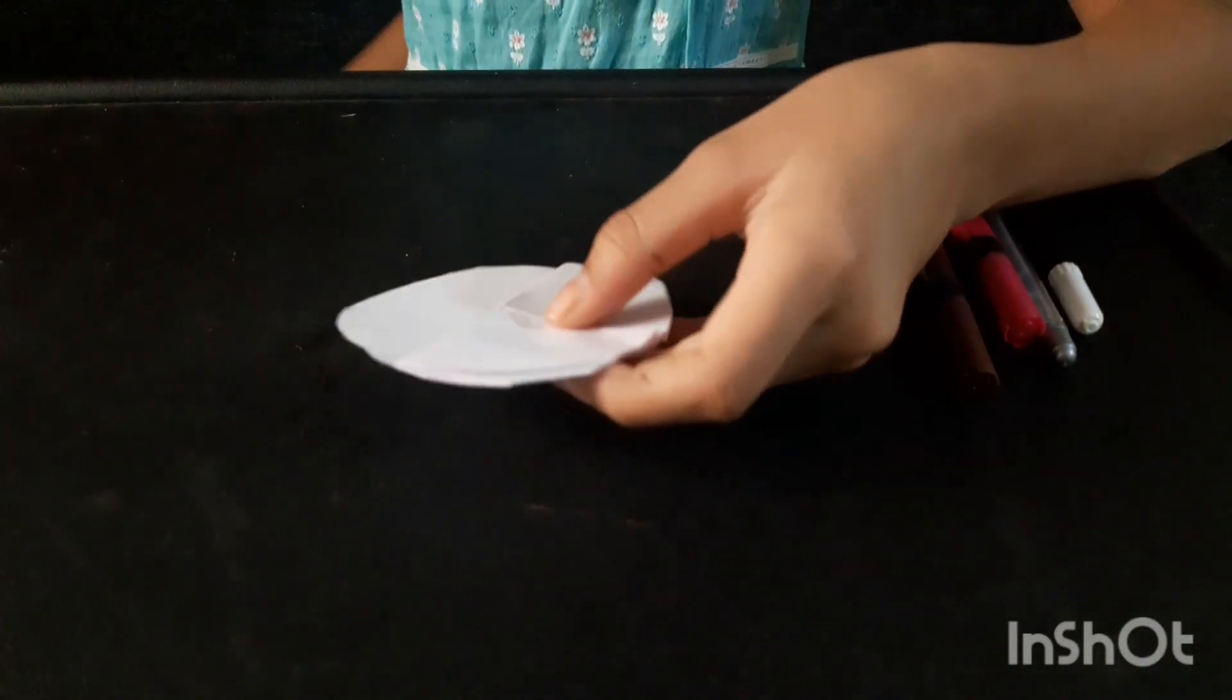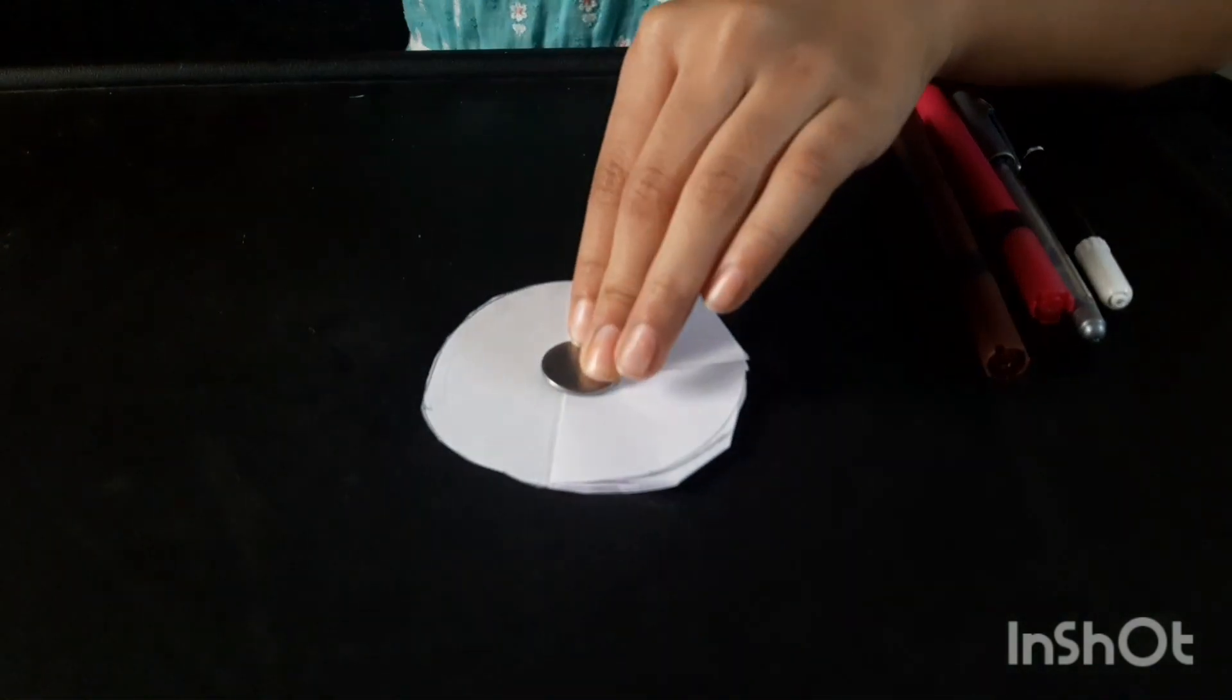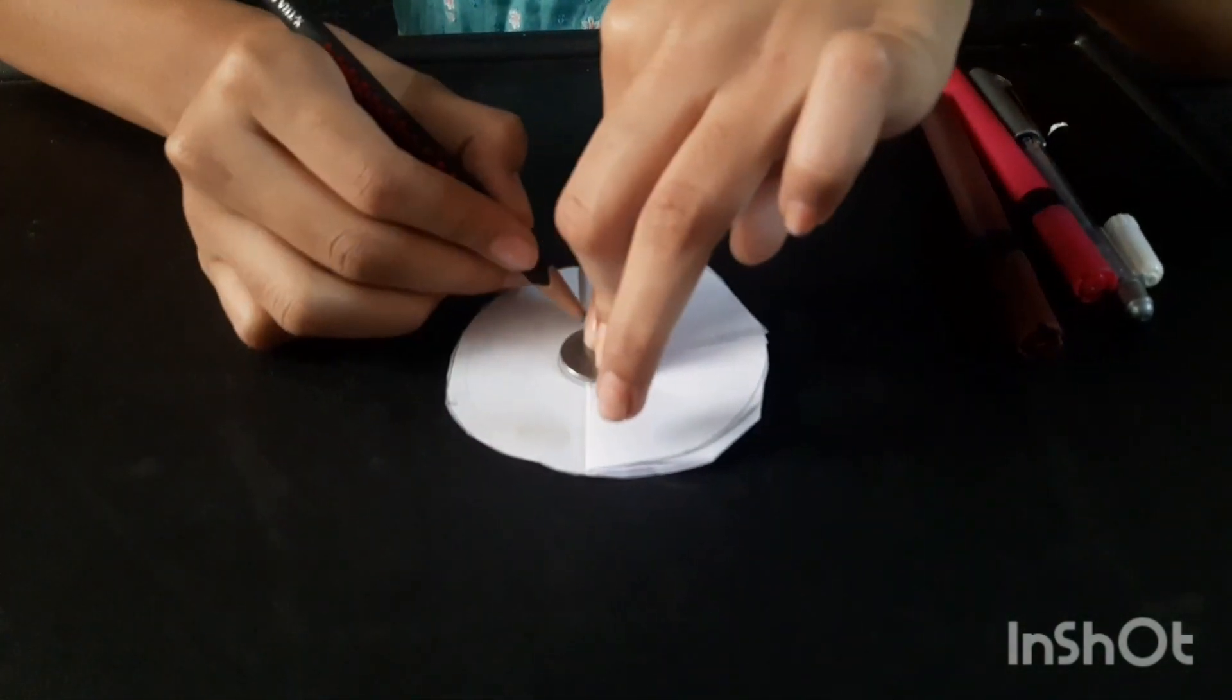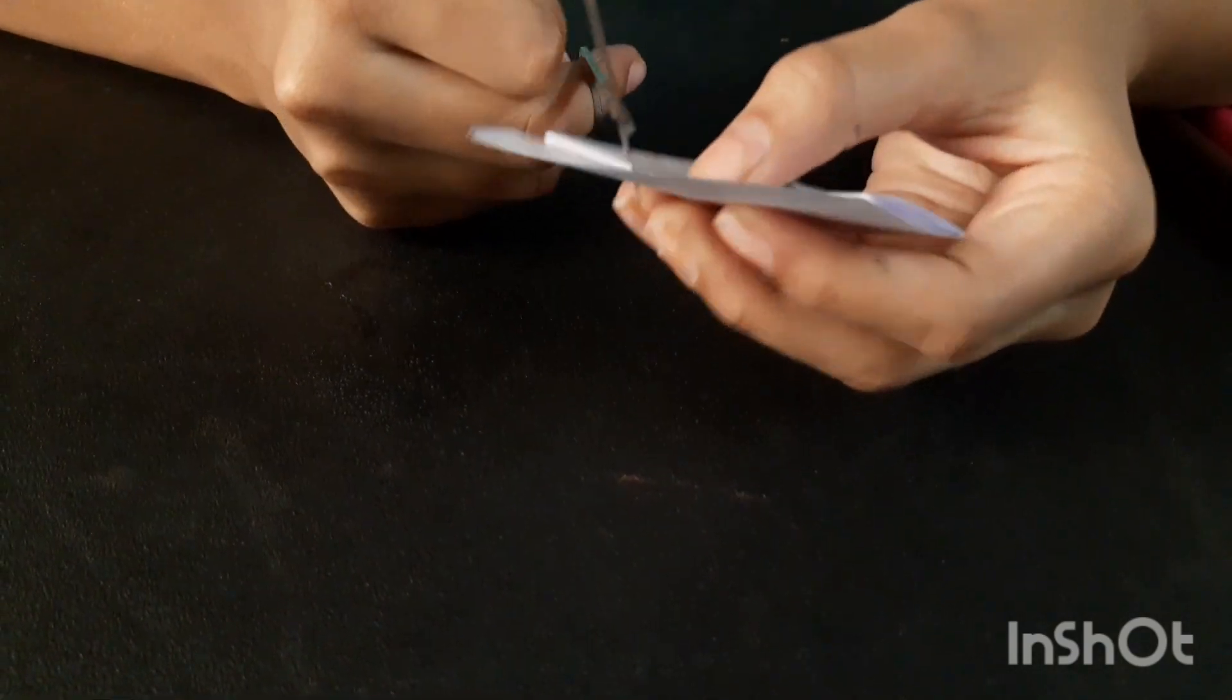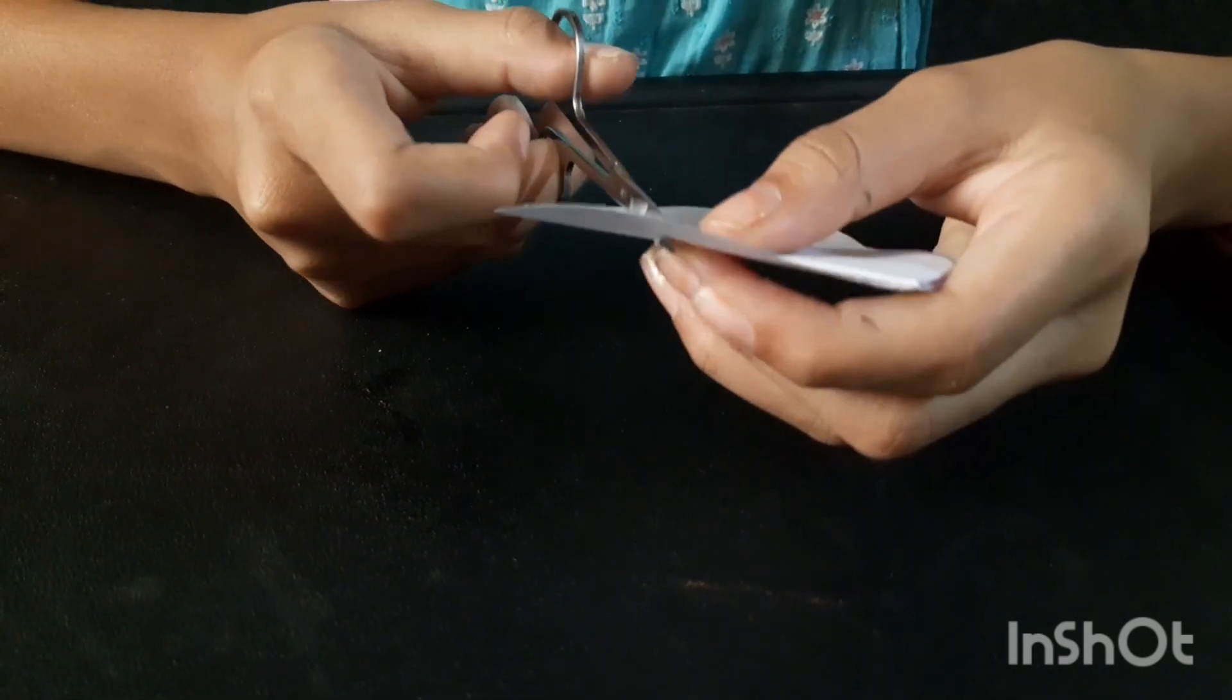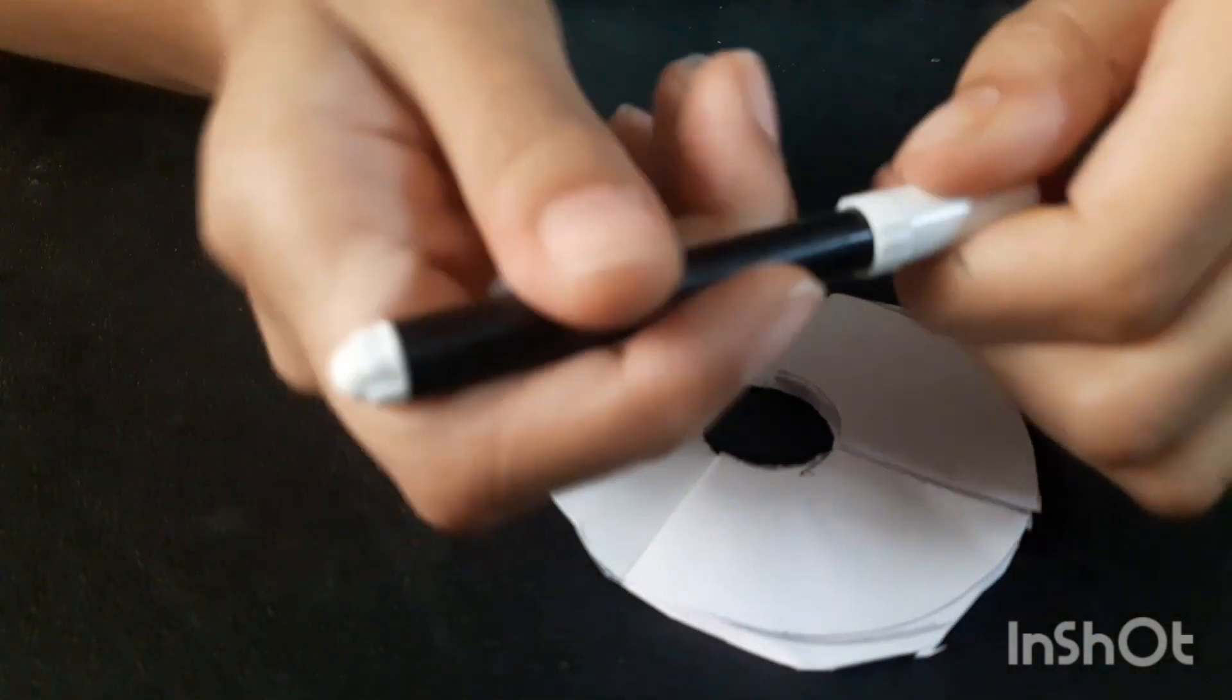Do the same thing to this so that it doesn't get shifted away or moved away. Now we will be needing the marker set. We are going to be needing the coin right here and the pencil. Now as we are done with the circle, we are going to be needing the small scissors and we are going to be cutting it.